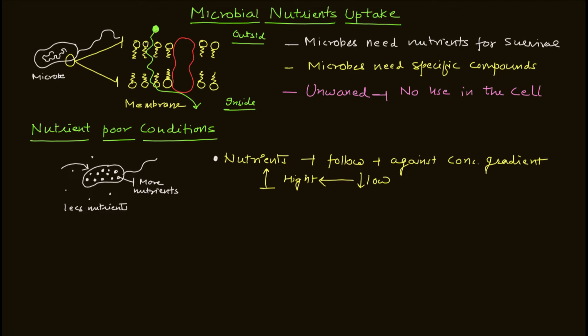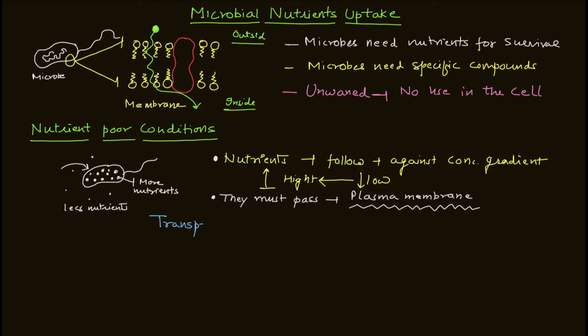The nutrients must also pass the plasma membrane, which we discussed in the cell structure. The plasma membrane or the cell wall of the bacteria has a blocking effect, so nutrients must pass that particular barrier. To do that, there must be some transport mechanisms in place.